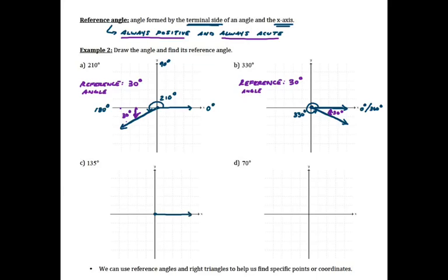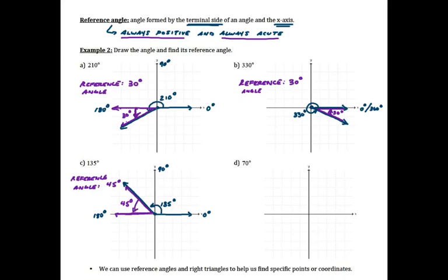For part C, I want to draw a 135 degree angle, which is exactly in the middle of 90 and 180 degrees. There's my initial side and there's my terminal side. In terms of my reference angle, it would be how far away the terminal side is from the x-axis — in this case a reference angle of 45 degrees, shown in purple on the graph.